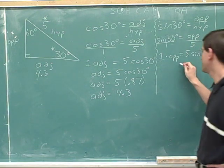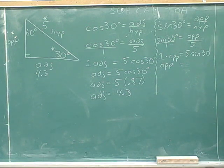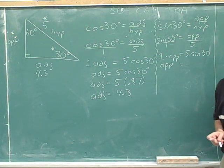Now, 1 times the opposite side is just the length of the opposite side. So that 1 drops out. And now we can figure out 5 times the sine of 30.